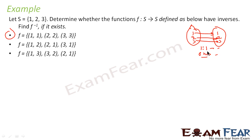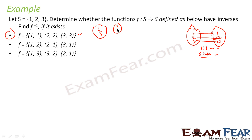Since it is bijective, the inverse exists. To find the inverse, we just flip it. If you flip this mapping, you get the same thing: 1→1, 2→2, 3→3. So this is my inverse function.